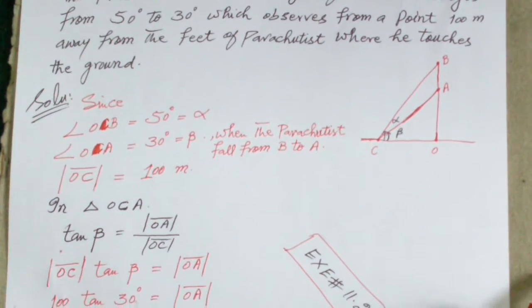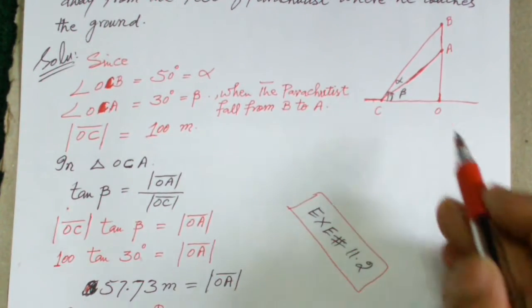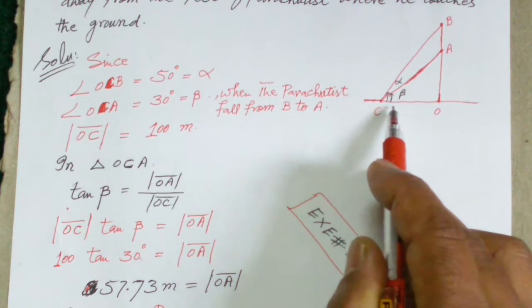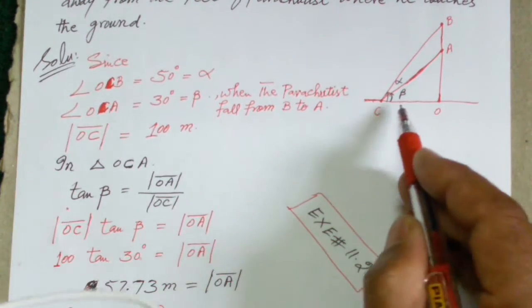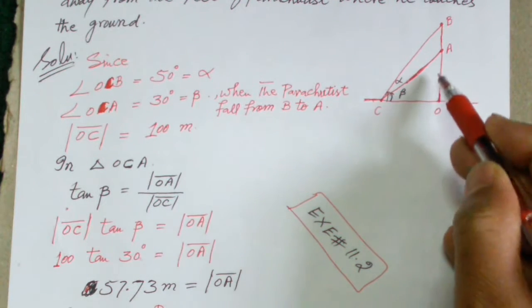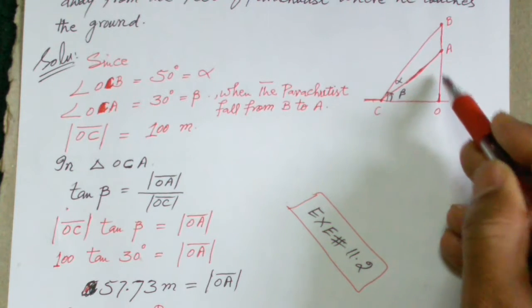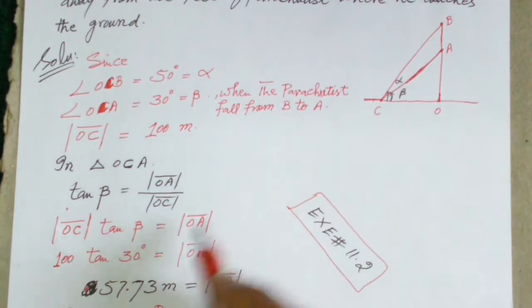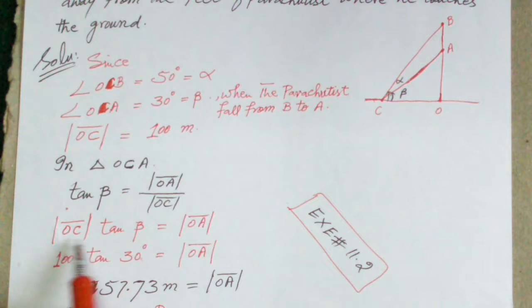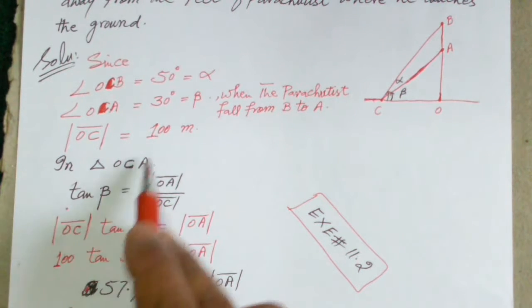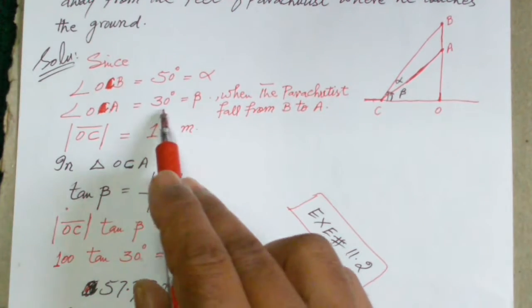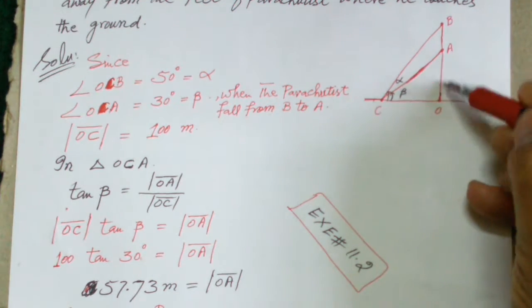In triangle OCA, OA is equal to 10 meters and angle beta is equal to 30 degrees. OA is the perpendicular and OC is the base. So tangent of beta equals OA divided by OC. Rearranging, OC times tangent(beta) equals OA. OC is 100 meters, and angle beta is 30 degrees.